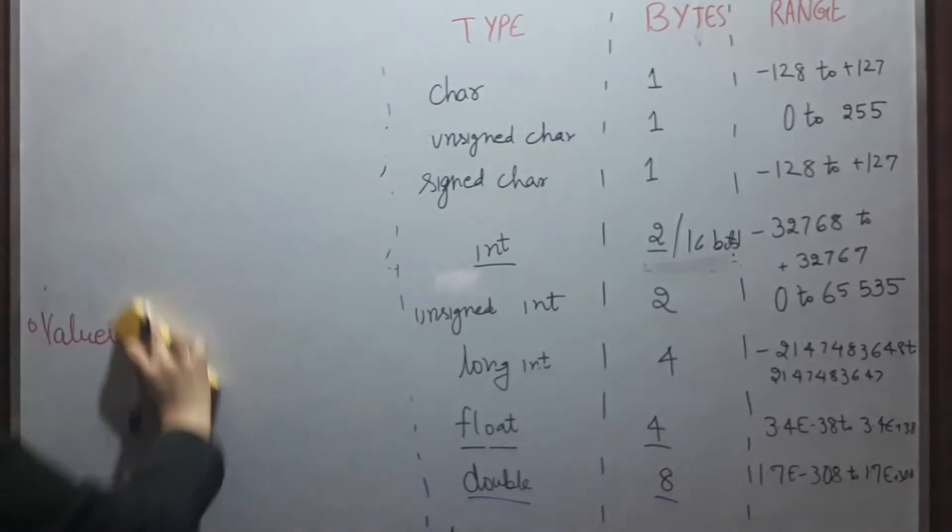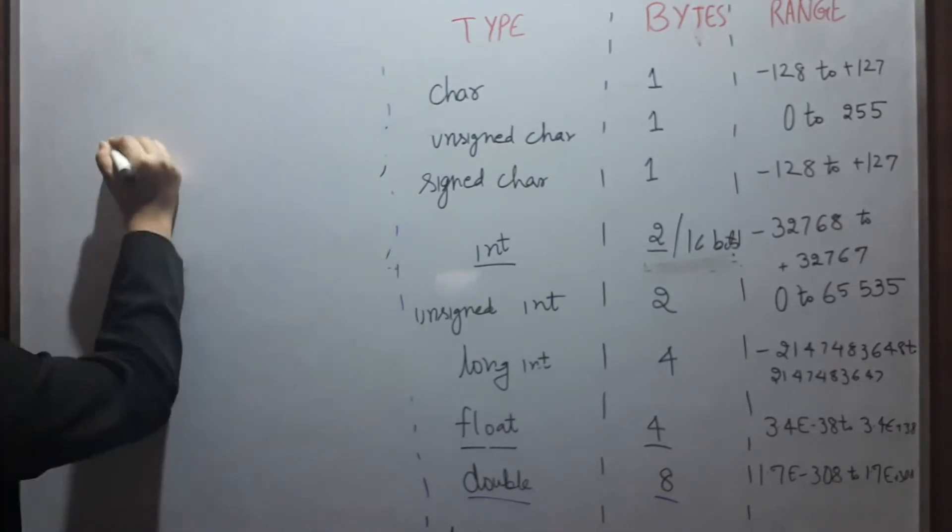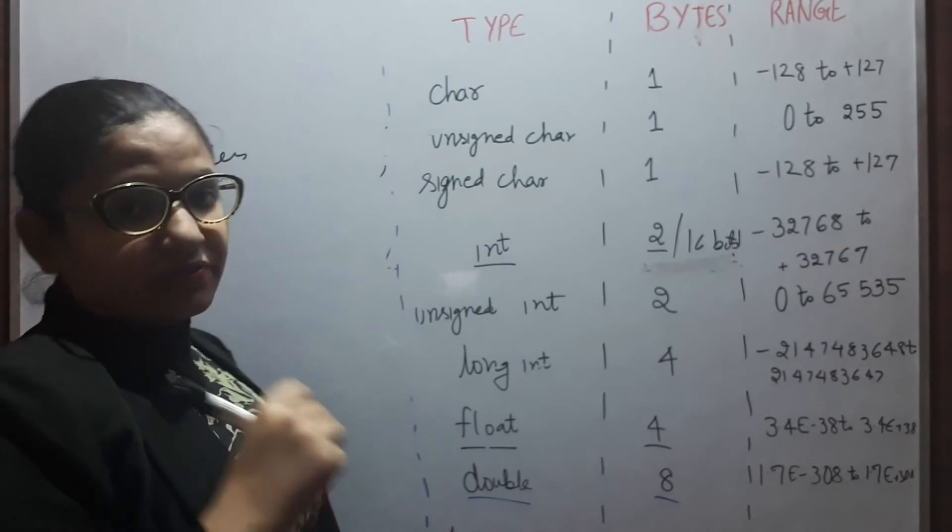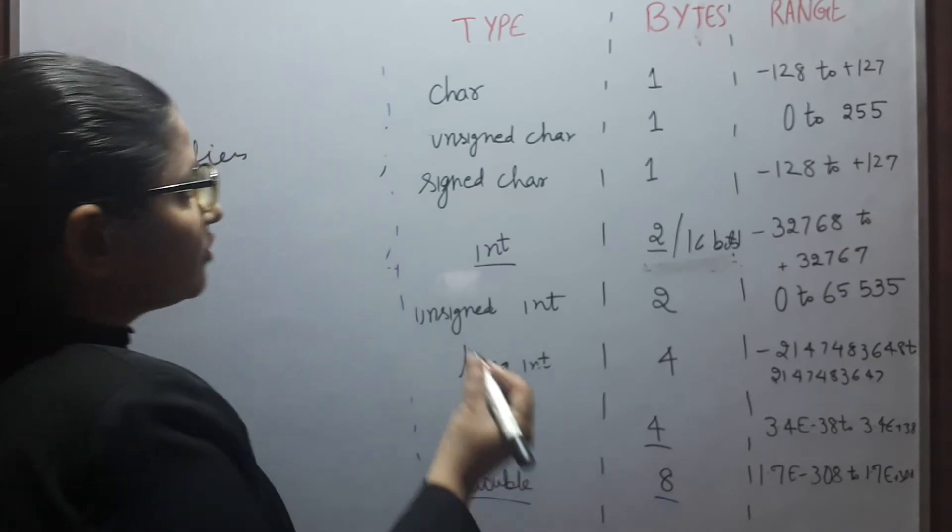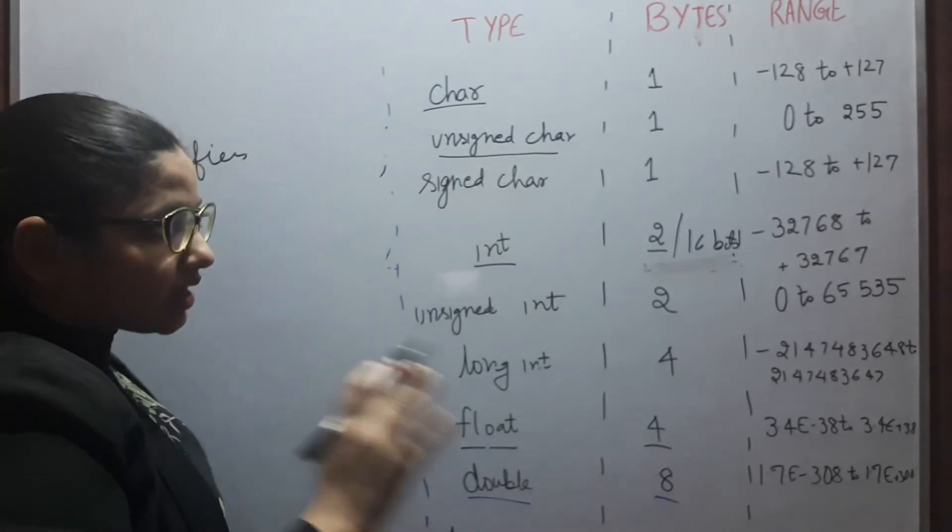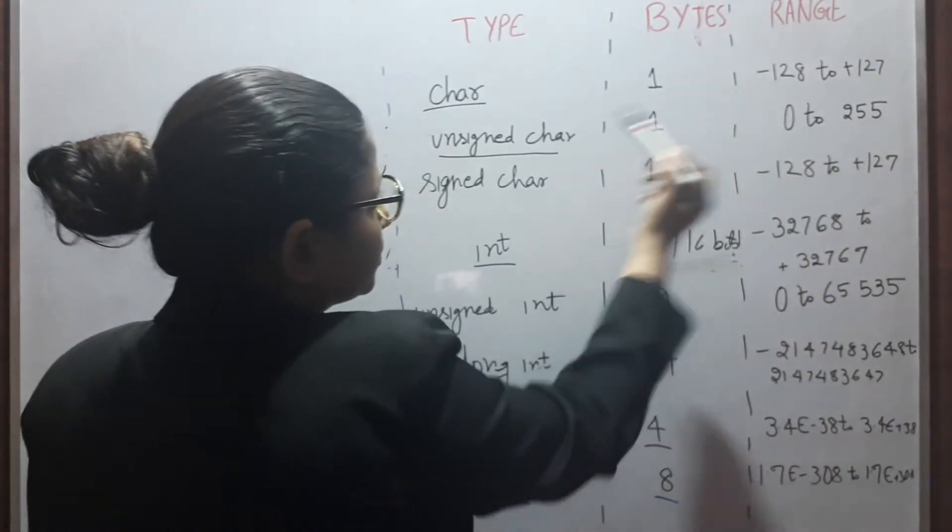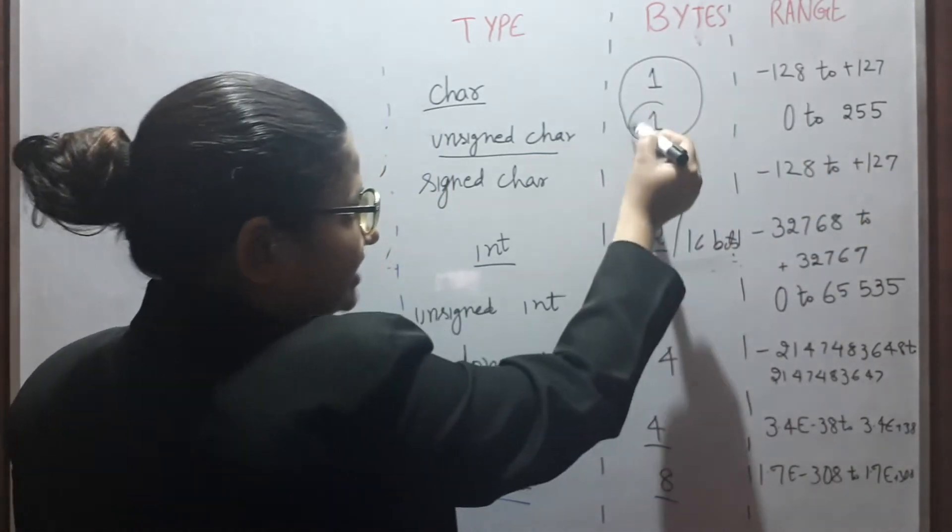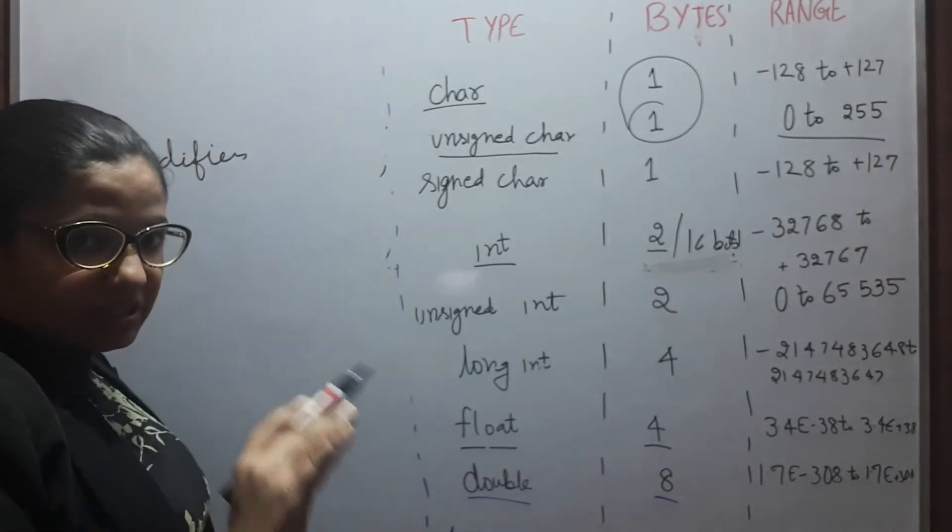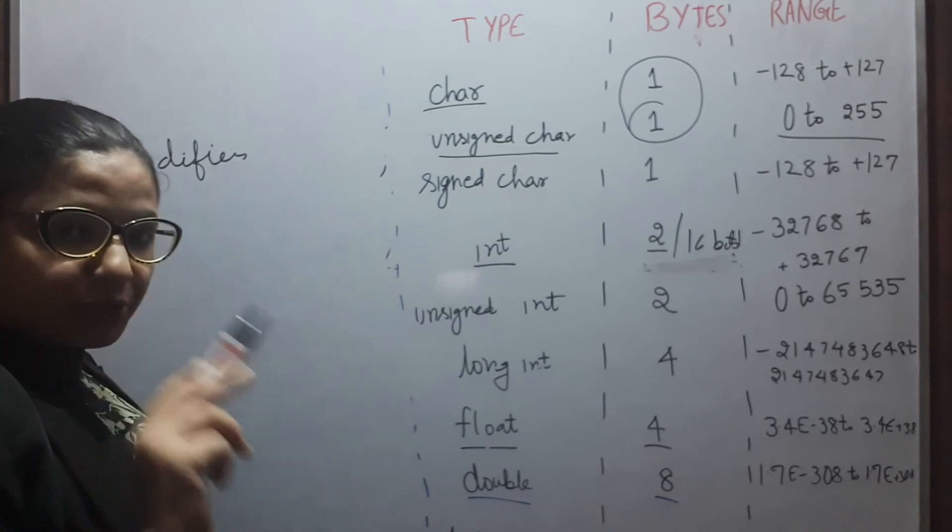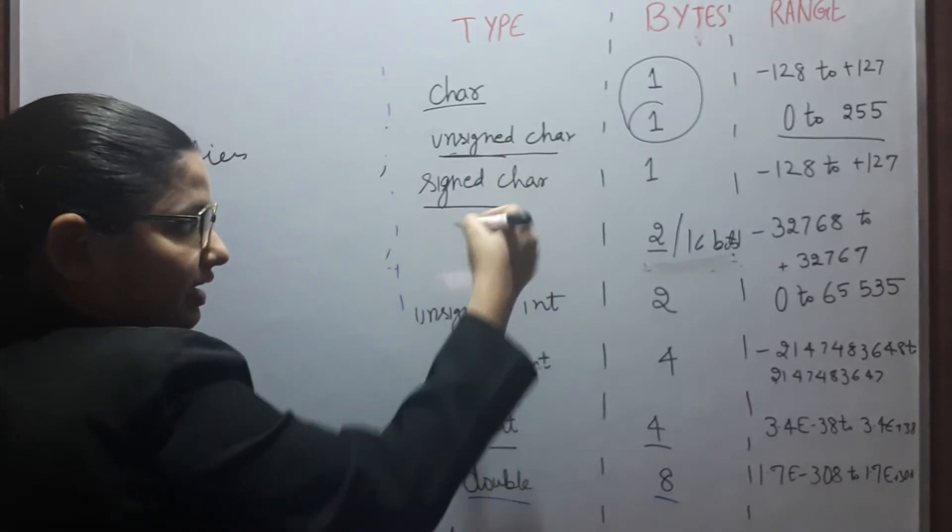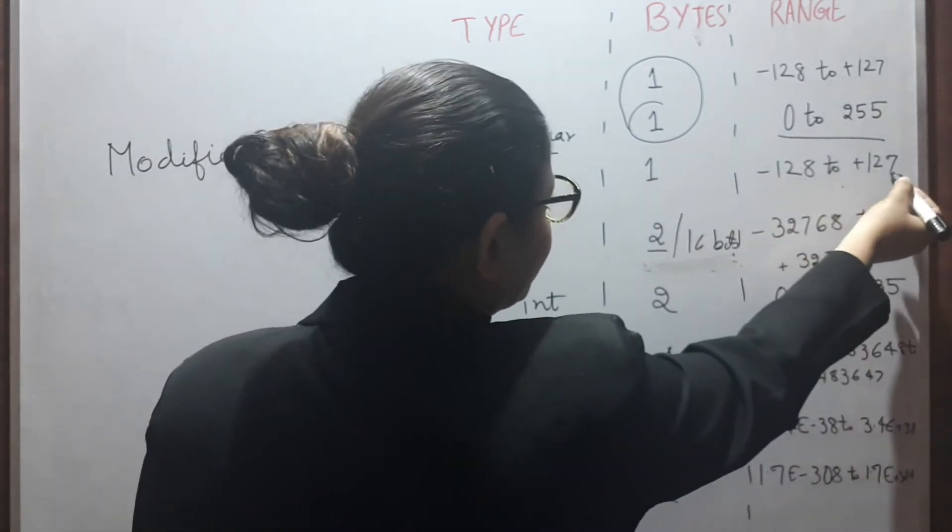Next point is, we have modifiers. What we have? We have modifiers with integers and floating point values. For example, char, unsigned char. Unsigned char means, now remove the negative part, only positive. So now the range, memory requirement is same, 1 byte. But now the range is different. Range is positive only, 0 to 255. Similarly, we can have signed char as well, which will be minus 128 to plus 127.